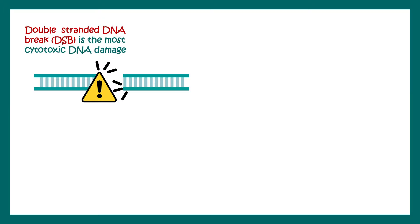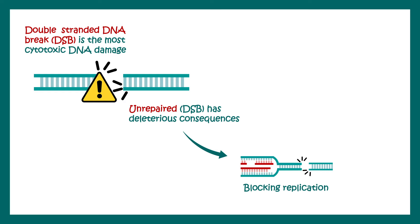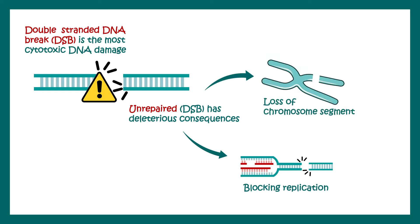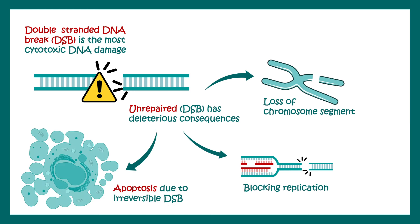A double-strand DNA break is the most cytotoxic form of DNA damage. It has to be repaired, otherwise it has multiple deleterious consequences. For example, it can block the progression of the replication fork, it can lead to loss of the chromosome segment, and it can lead to apoptosis if it is not reversed.